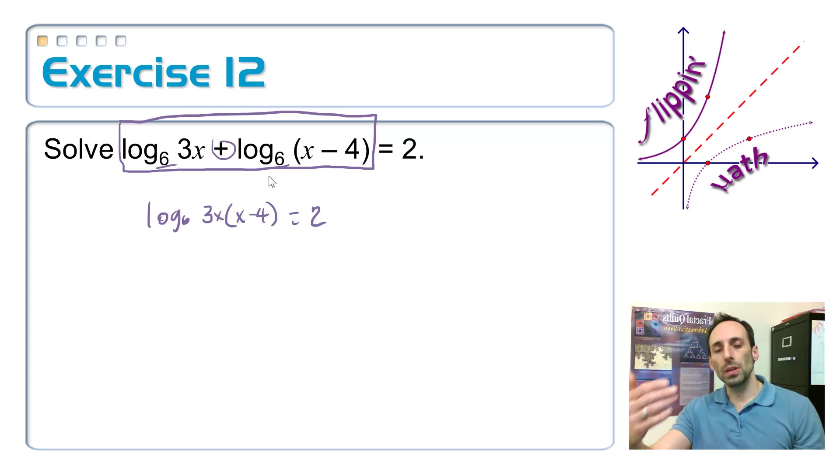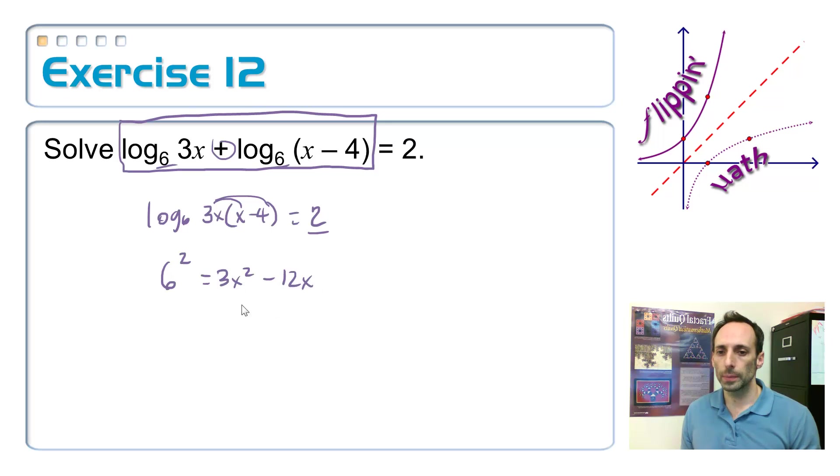Now, I can either exponentiate, or I can write this in exponential form. If I write it in exponential form, my base is 6. So, 6 to the second power, because a logarithm always gives me an exponent, is equal to, and now let's go ahead and distribute as we write this down, 3x squared minus 12x.